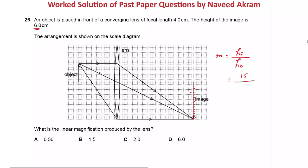Counting the small boxes for the image gives 15 boxes. Then measuring the height of the object gives 7.5 boxes. Dividing 15 by 7.5 gives a magnification of 2, so the answer is option C.